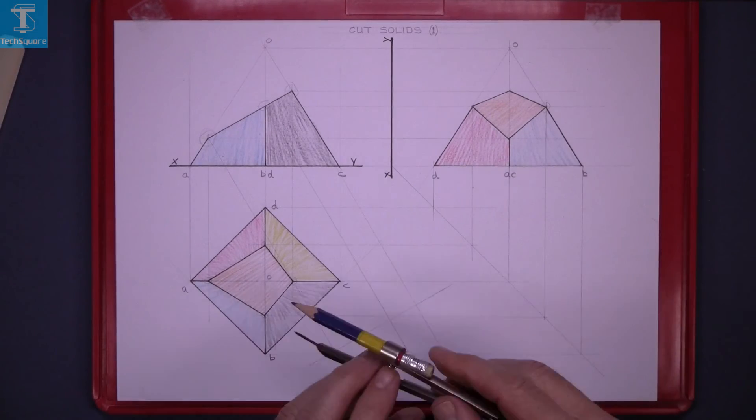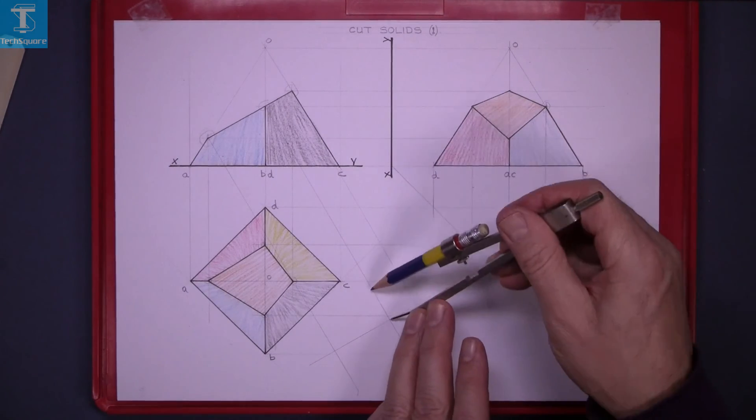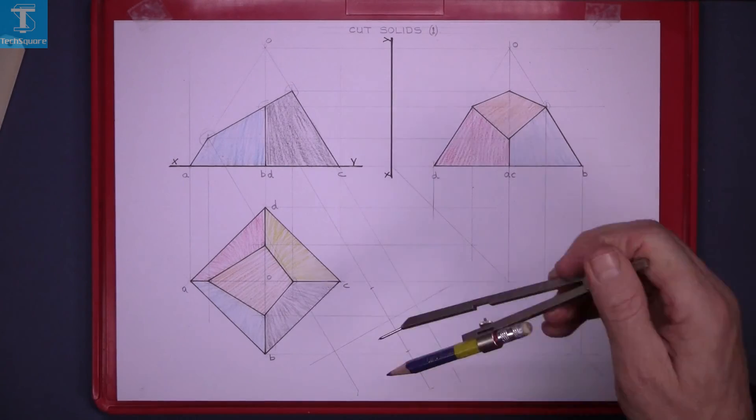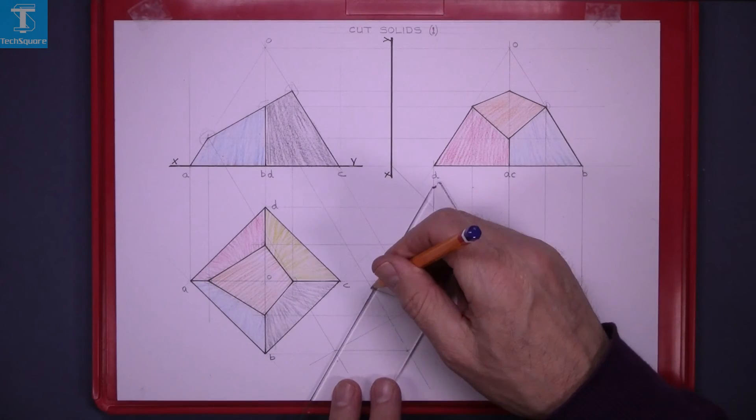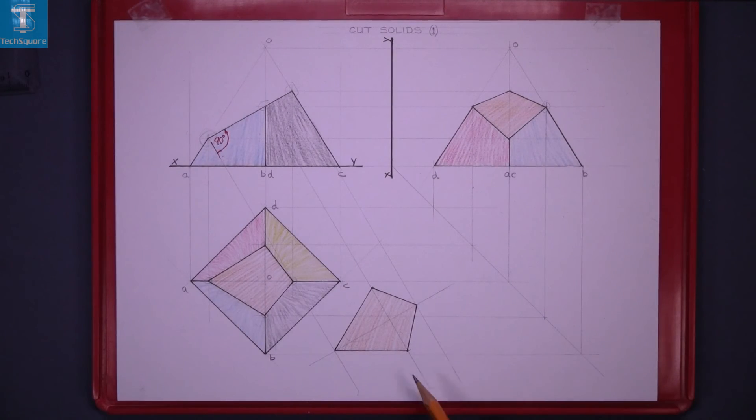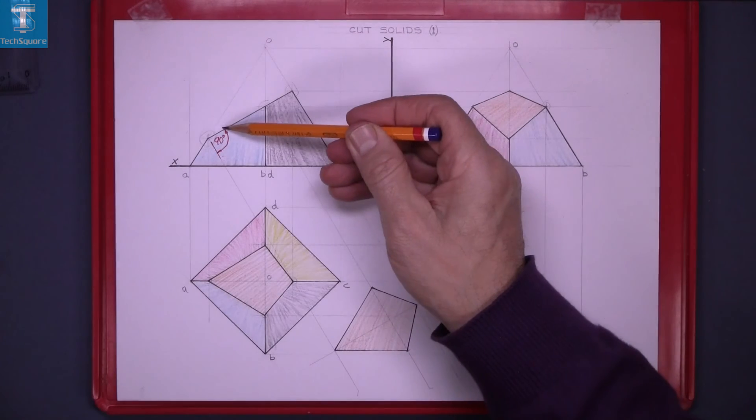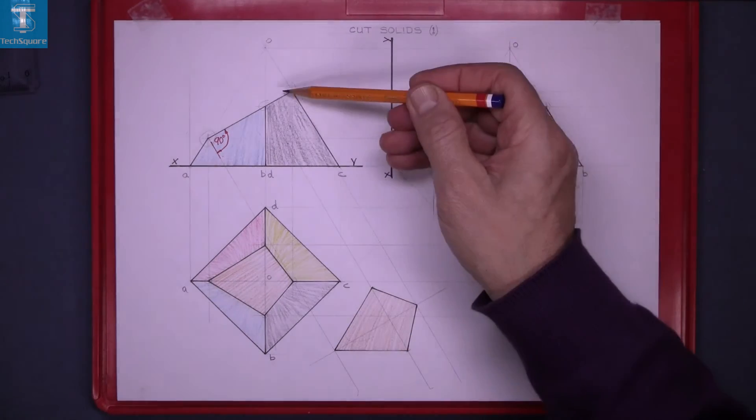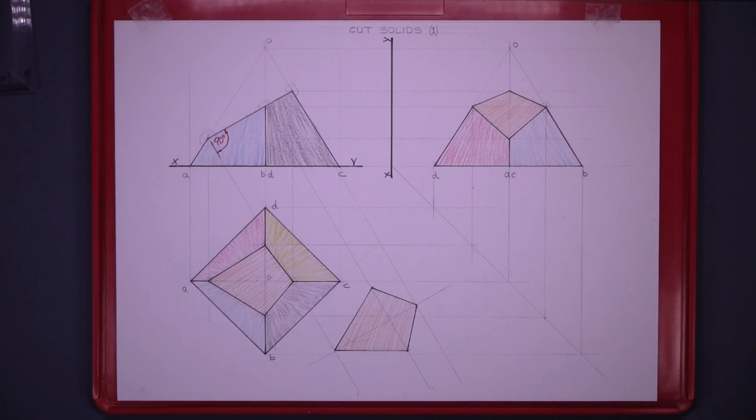Take your distances from the plan from the center out to the point and mark it on this line both ways and then join those two points up with the top and bottom point and that's the true shape of the section surface. You must project down at 90 degrees to the cut and that's cut solids one complete.